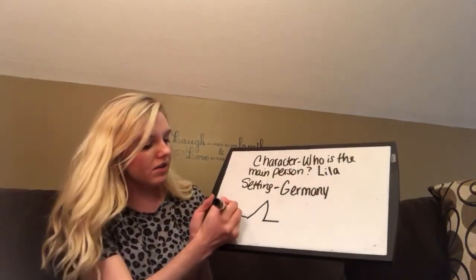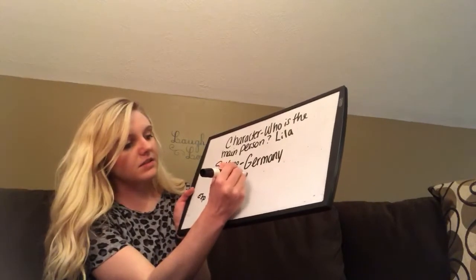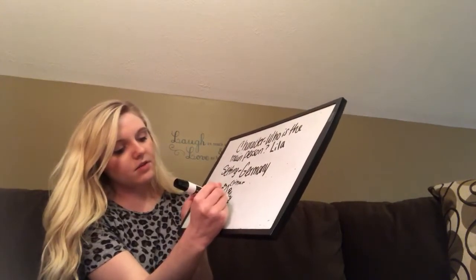For example, I'm going to pretend I choose Germany, and my character is going to be Lila. I'm also sending you guys a video called the Eight Point Arc storytelling. You guys already know how to do the typical plot map — where we have the exposition, the rising action, the climax, the falling action, and then the resolution.